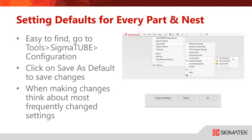Setting your default configuration will be the best way to ensure you are not constantly changing settings to get the toolpath that you want. It's easy to find and only found in one spot. Go to the tools menu, hover over Sigma 2, hover over configuration, and click configuration.